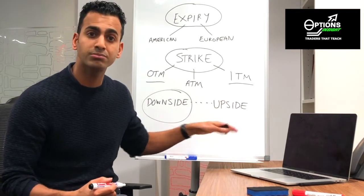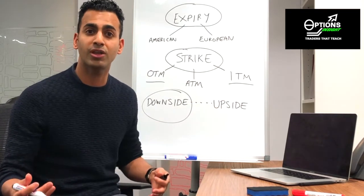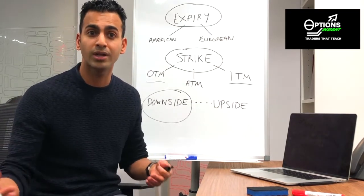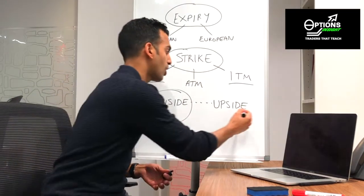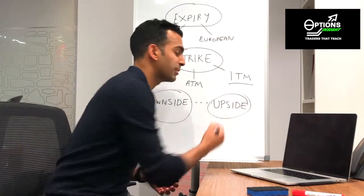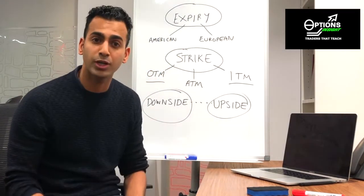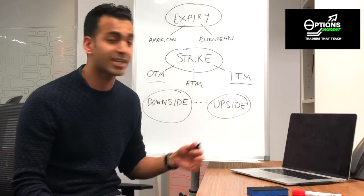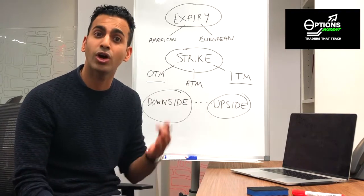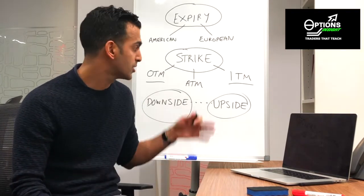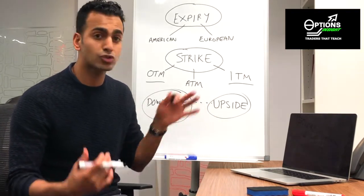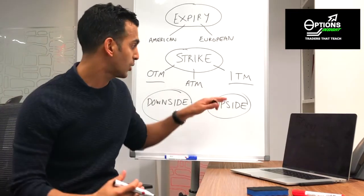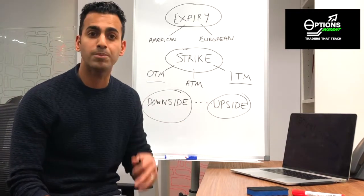On the upside, the flip side of that argument is upside calls. Upside calls are generally going to be the out of the money options, and it's out of the money options that tend to trade in the highest volume. So when we talk about strikes that are above the current underlying price, we're talking about upside.